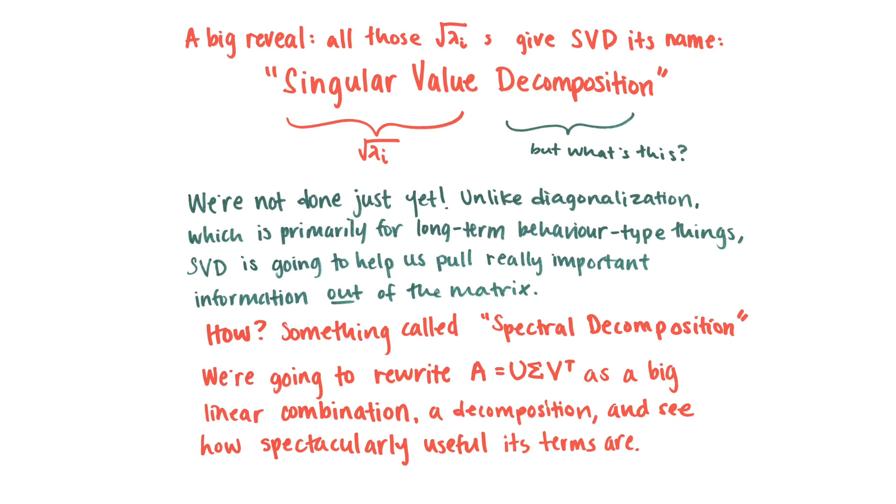So here's a big reveal. All of those square root of lambda i's give SVD its name, singular value decomposition, where singular value refers to square root of lambda sub i. But what's this? What's decomposition? Turns out we're not done yet. Unlike diagonalization, which is primarily for long-term behavior, like we talked about with the Leslie matrix, SVD is going to help us pull really important information out of our matrix A. What really important information? We'll tell you that later. But let's talk about how. It's called spectral decomposition. There's the decomposition.